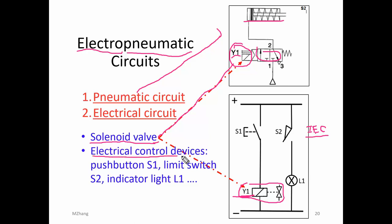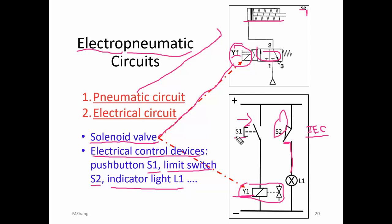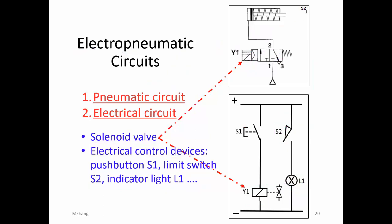The solenoid is like a bridge or interface between the two systems. You also have a push-button S1 and a limit switch S2, which is normally open and installed at the extended position. The indicator light is activated by the limit switch. When you press the button, you activate the solenoid, which switches the pneumatic valve and extends the cylinder. When the cylinder extends to S2, that closes, turning on the indicator light. This is a very simple circuit.